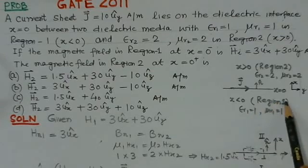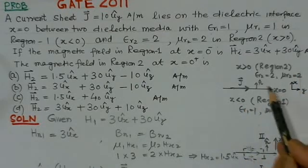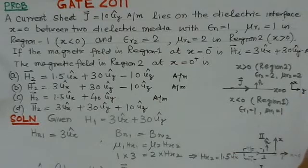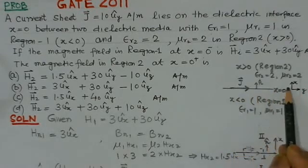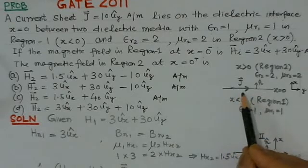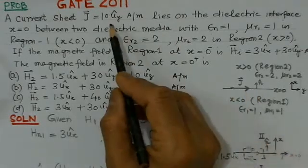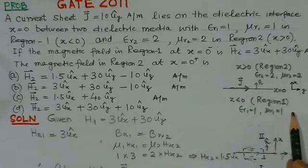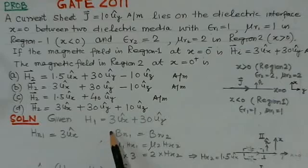Let us see the problem. There is region 1 and region 2. This region is for x < 0, this region is for x > 0. The x coordinate is the vertical and y coordinate is the horizontal coordinate, and this is the boundary of the two media where the surface current density is given, that is 10 amperes per meter which is directed in the direction of y. This is the direction of the current sheet and we have to find out the total magnetic field in region 2.